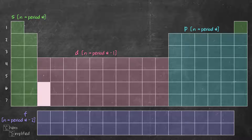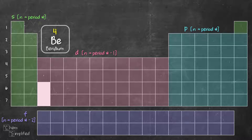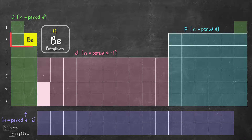For S block, the energy level is the same as the period number. Same goes for P block. D block is minus 1, which means the energy level is period number minus 1. For F, it's minus 2, which means the energy level is period number minus 2. This relationship may not make much sense right now, but we're going to use examples and it's going to make perfect sense. We'll start with beryllium, which is element number 4, located in the S block.